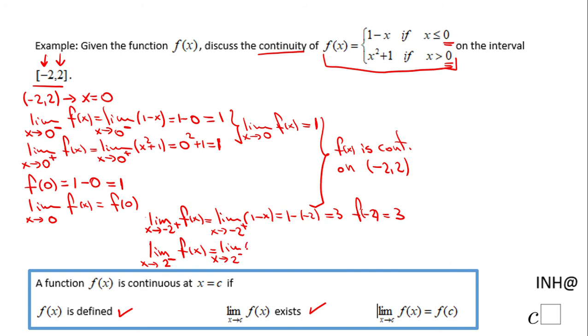We're going to have x squared plus 1 here, and we end up with 2 squared plus 1, which is 5. And this is also the value of the function at 2.